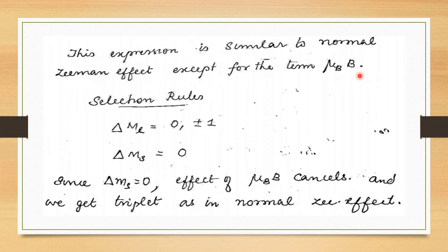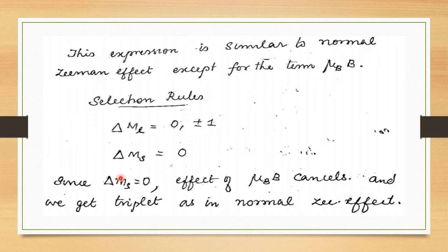The selection rules are Δml = 0, ±1 and Δms = 0. Since Δms = 0, the effect of the 2ms·μB·B term cancels. Note that the change in ms is always ±½, so the extra term cancels and we get a triplet, as in the normal Zeeman effect.